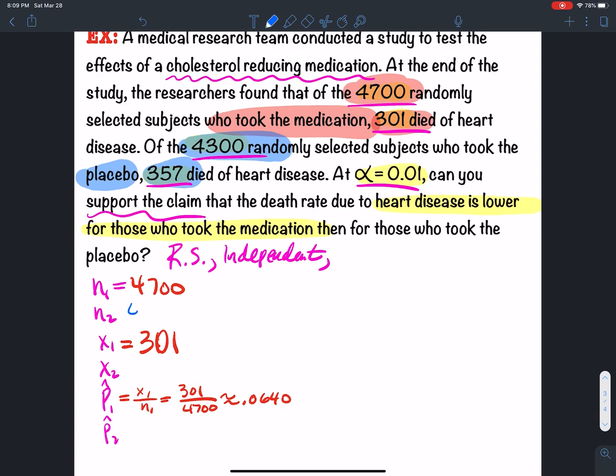So x2 over n2 is P hat 2, which is 357 over 4,300. Four decimals is going to be 0.0830.